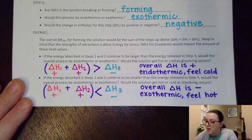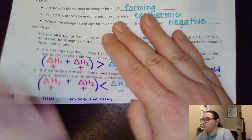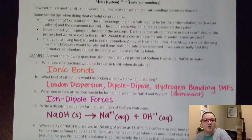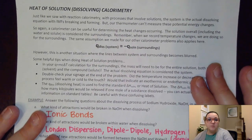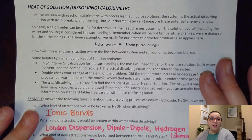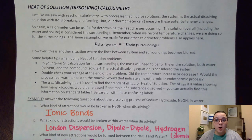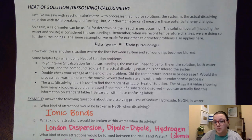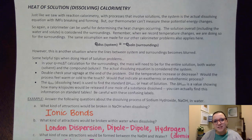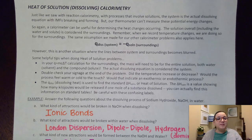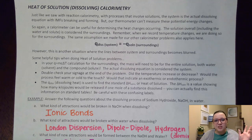Let's flip the page and look at how we would do a calculation for the heat of solution. This is going to be using the idea of calorimetry, so we are going to be using the MC delta T equation, just like we did on other calorimetry problems. However, we are again going to have to address the idea that the heat change of the system is the equal yet opposite heat change of the surroundings.